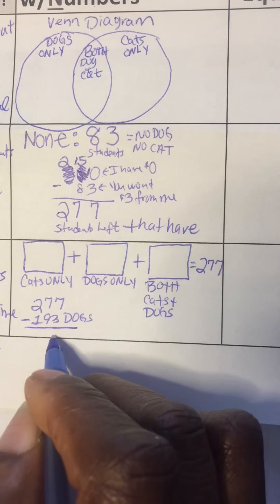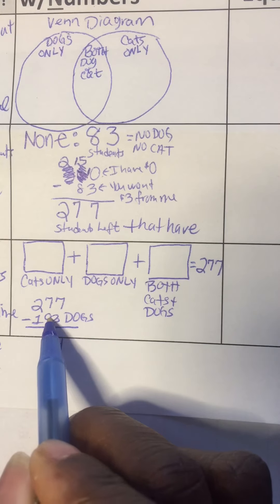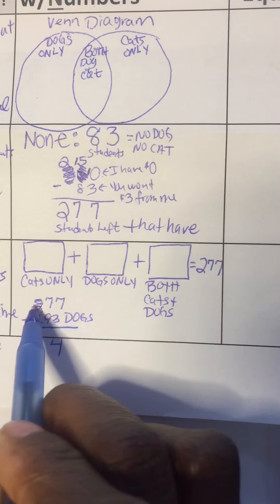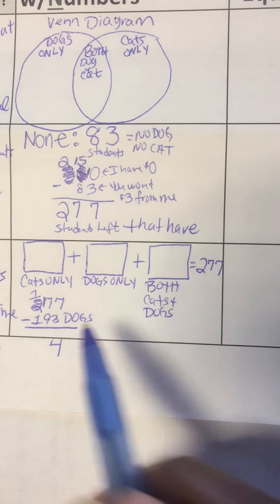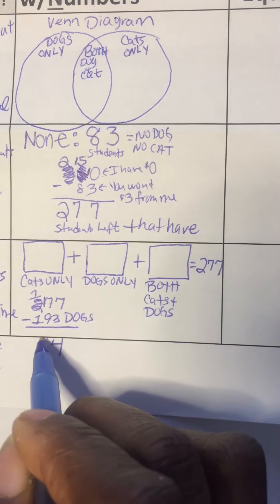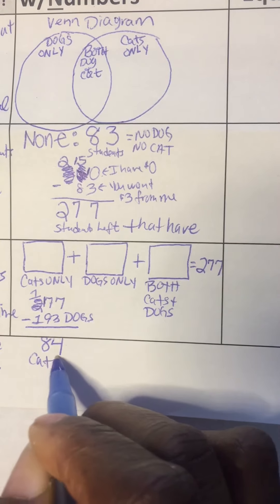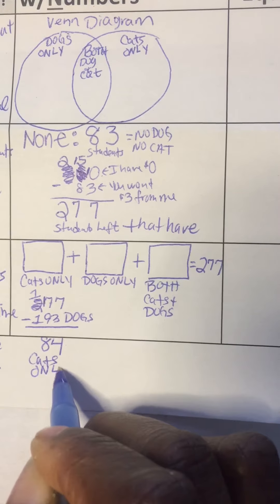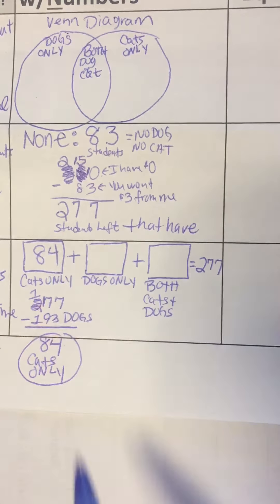And the 7 minus 3 is 4. 7, you want 9. I can't do that, so I'm going next door to the 2 and borrow 1. That becomes the number 1. Put the 1 in front of the 7, so 17 minus 9 is 8. So now 84 represents cats only. So there are 84 cats only.